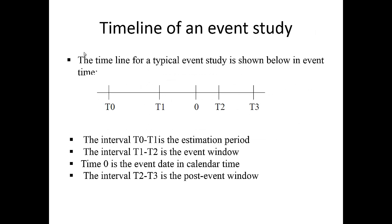The timeline for an event study looks like this. The t's don't reflect days — they just reflect periods of time. There are four different intervals. The first interval is from t0 to t1, and that's the estimation period, which will generally be about a year's worth of time.